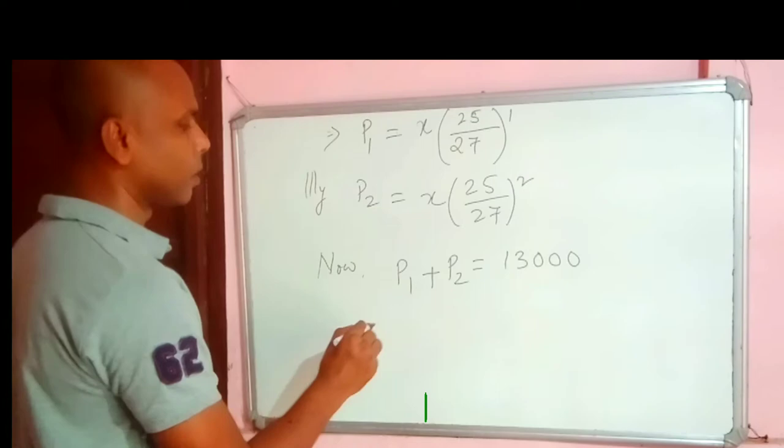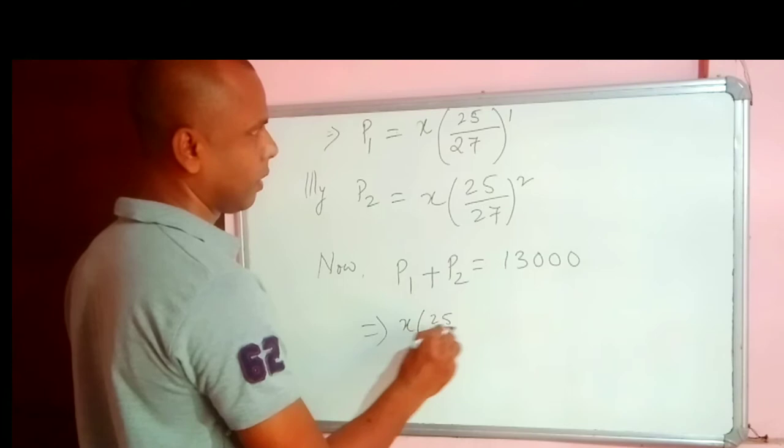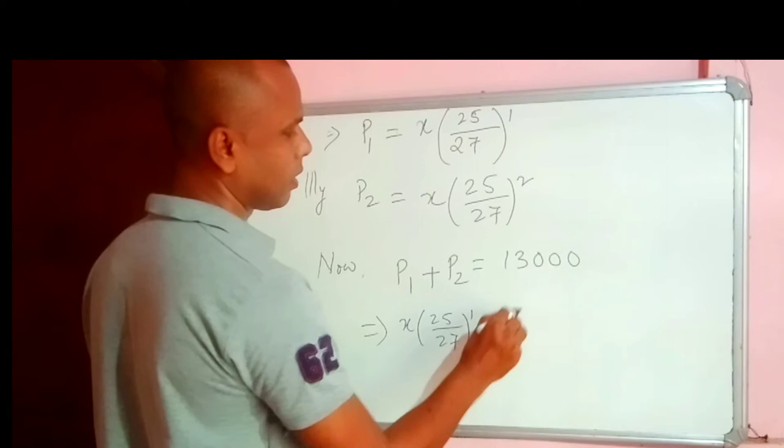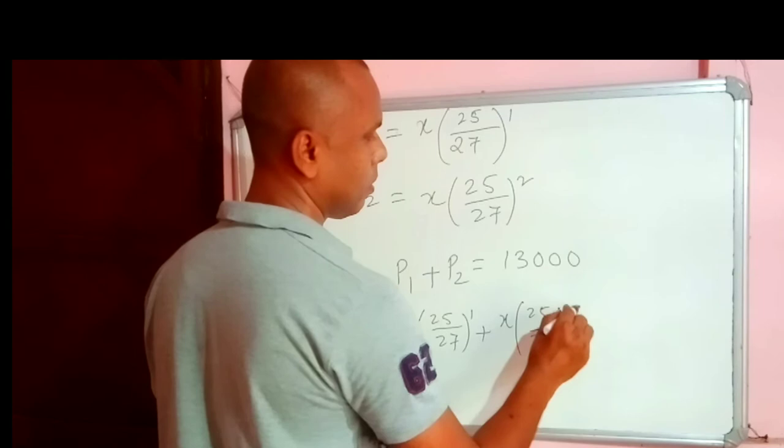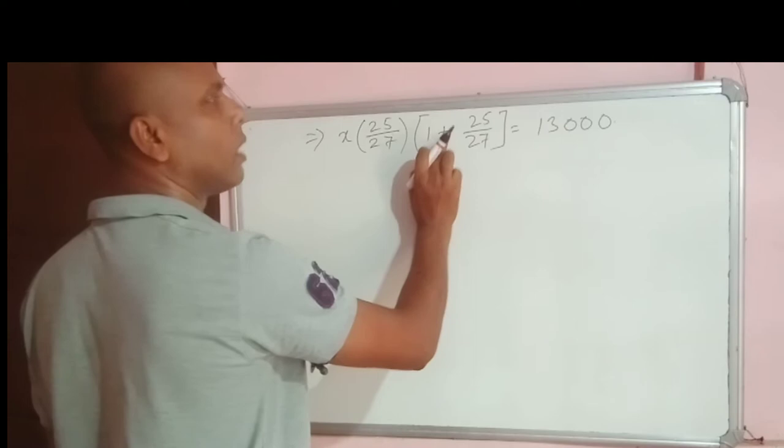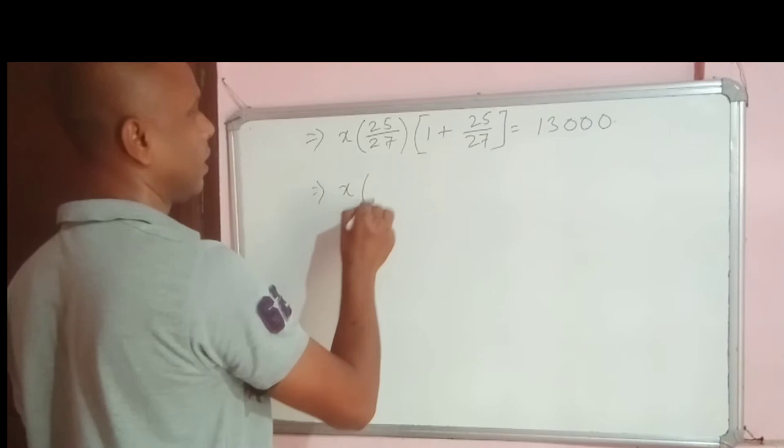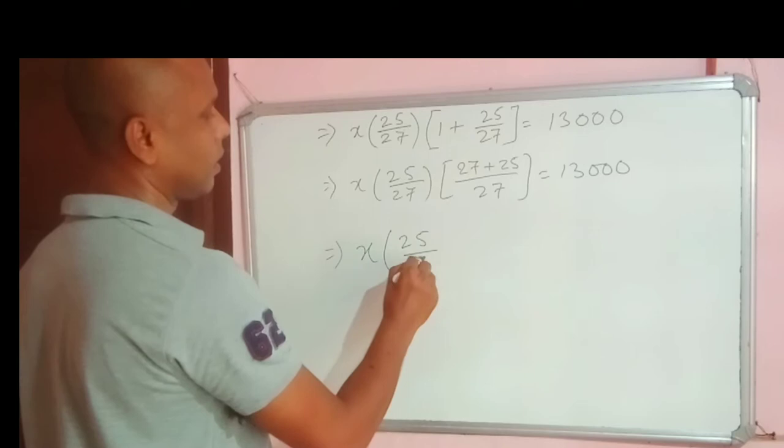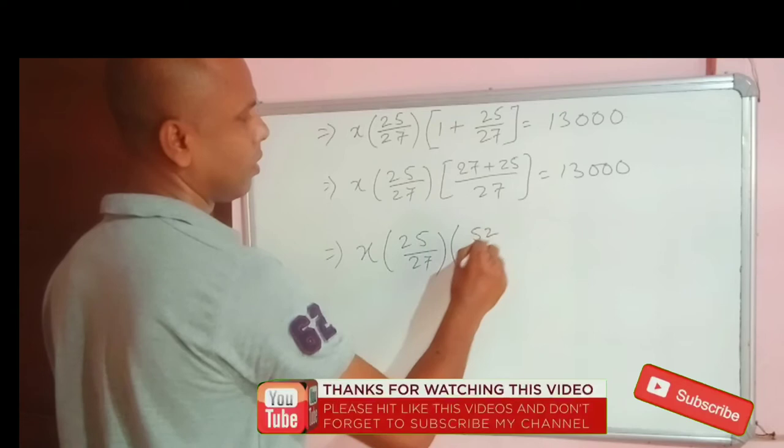Substituting the value of P1 is X 25 by 27, P2 is X 25 by 27 power to the power 2 is equal to 13,000. In this case we took common X 25 by 27 so we are left with 1 plus 25 by 27 inside the bracket. So we will simplify. We are going to add 25 by 27 so it is 52 by 27 equal to 13,000.